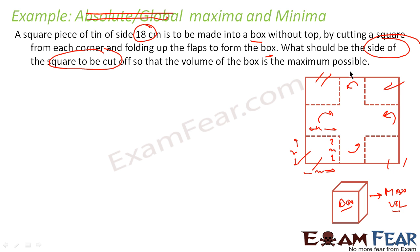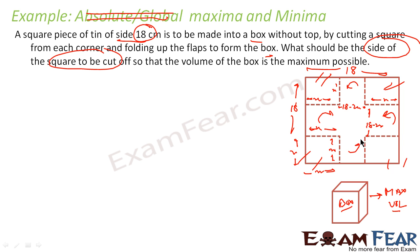If you observe here, if this whole length is 18cm and this side is x and this side is also x, then this middle portion becomes 18 minus 2x. I am finding the edges of this box. Similarly, the other direction is also 18, with x on each end, giving 18 minus 2x. And this particular length — because this flap will fold up — that depth becomes x. So the sides of the box will be 18 minus 2x, 18 minus 2x, and x.